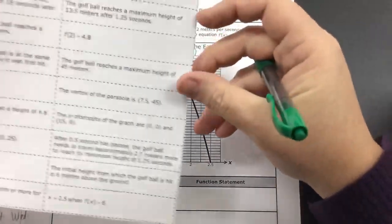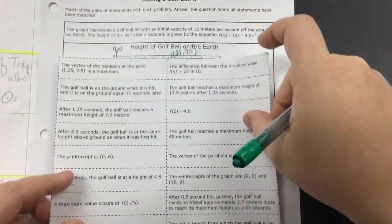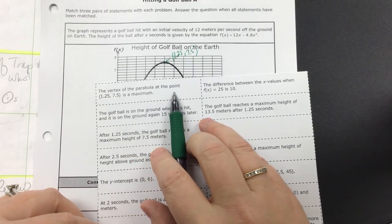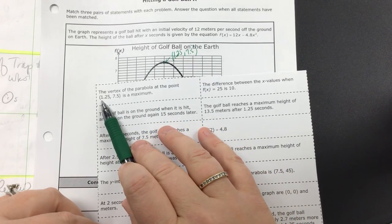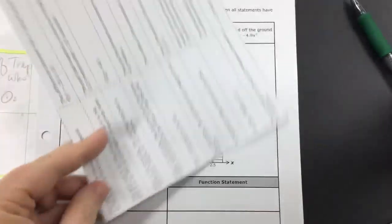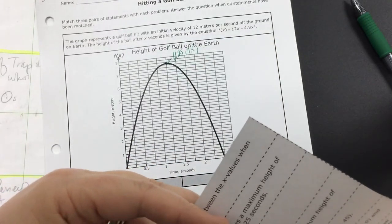So if I look at my options, okay, so if I look at this one, it says the vertex of the parabola is at a point which is 1.25, seven and a half. That's what I figured. And that's a maximum. So what I'm going to do is take this particular card, cut it out.